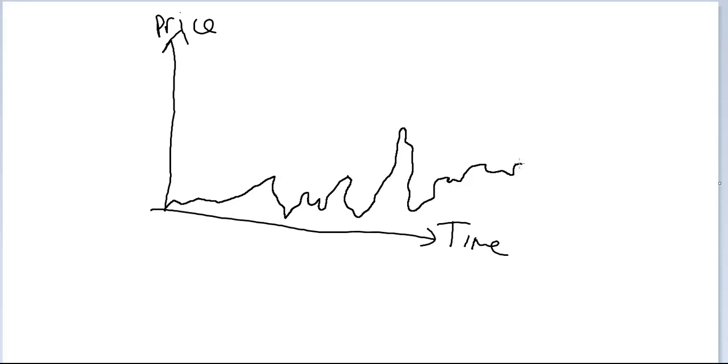So we have a share price. This is the price and this is time, so it'll be going up and down, something like that. Of course it would be something entirely different. This is just one potential share price, the kind of thing that can happen.